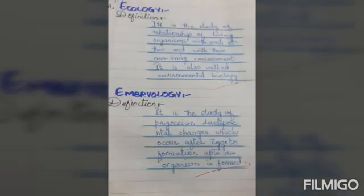Side heading — Ecology. Write down its definition: it is the study of the relationship of living organisms with each other and with their non-living environment. It is also called environmental biology.